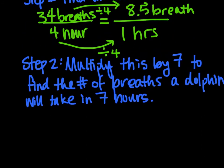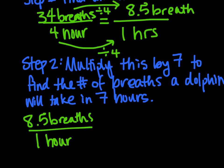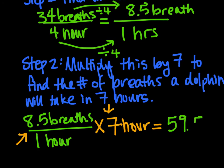Now, that 8.5 breaths in one hour, we need to use that information. Breaths per one hour. We need to use this information to figure out how much it takes for a dolphin to breathe in seven hours. And if you notice, I just multiplied by seven. Essentially, if I have a unit rate, if I know how much something does something in one hour, so a dolphin breathes 8.5 times per one hour, if I just multiply by seven, I can find out exactly how much it will breathe in seven hours. And in seven hours, 8.5 times seven is approximately 59.5 breaths.